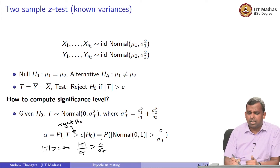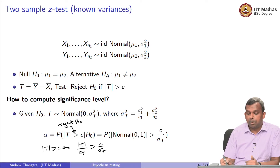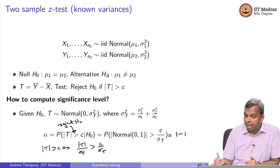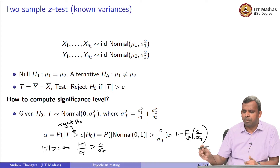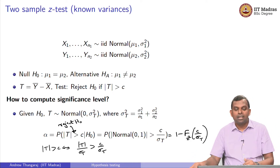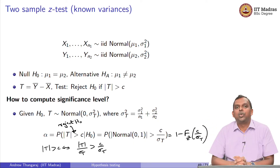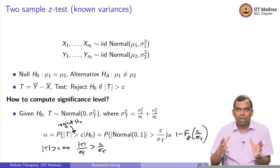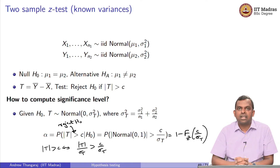It is the same normal calculation, so the probability becomes P(N(0,1) > c / sigma_T), which you can write as 1 minus Phi(c / sigma_T). That is the famous two-sample Z test. You can see how easy it is to derive once you understand the principles behind how these tests and significance levels are computed.